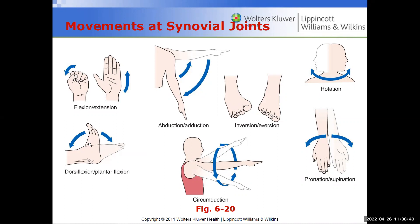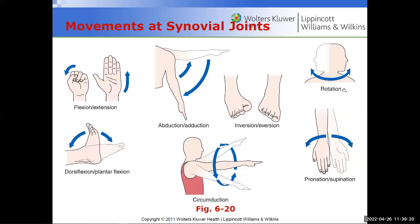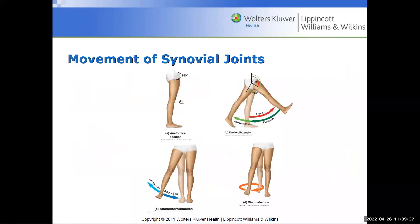Joint movements: flexion is bringing it in, extension is playing it out. Dorsiflexion is bringing your foot to a perpendicular 90-degree angle, while plantar flexion is when you have a 180-degree angle with your tibia — foot flat out. Abduction is taking the limb away from the body and adduction is bringing it in. Inversion and eversion relate to the ankle turning in and out.